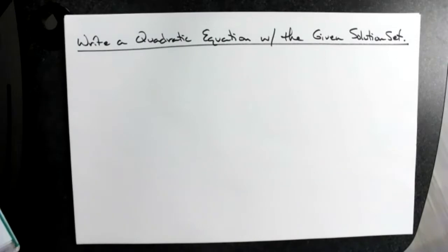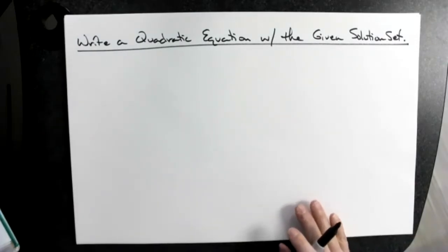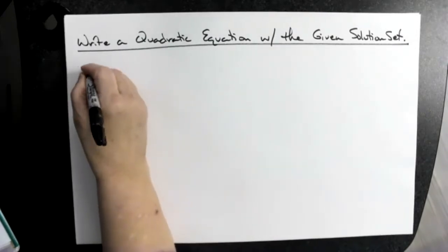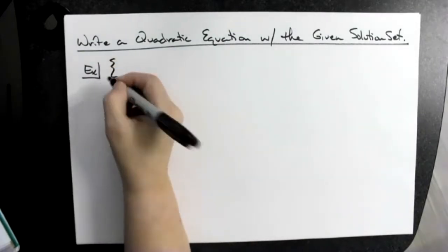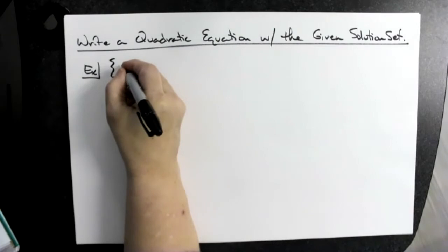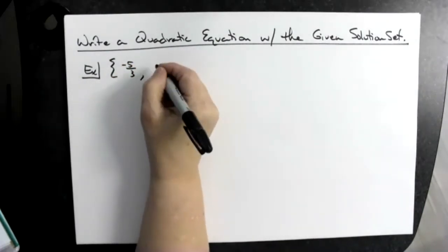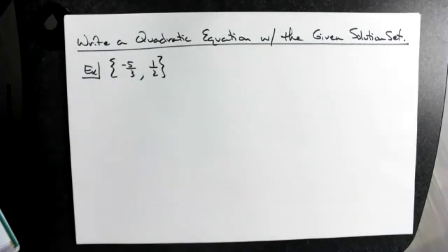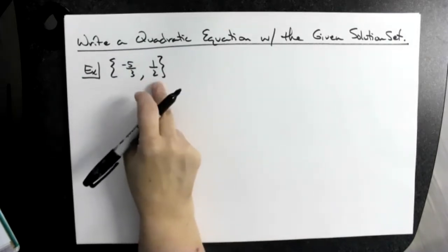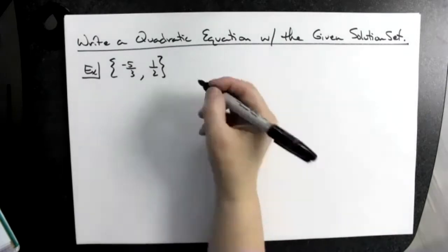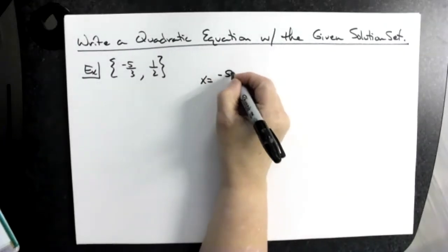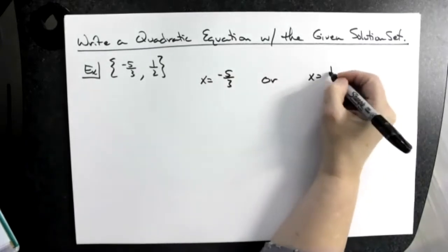We're going backwards — we have the answer and we're trying to go backwards to get to that original quadratic equation. Our solution set would be in set notation. Let's suppose we had negative five-thirds as one answer and one-half as another answer. When we solve any type of equation — one-step, two-step, or quadratic — we get all the way down to x equals something. These two answers came from solving the quadratic formula: x equals negative five-thirds or x equals one-half.